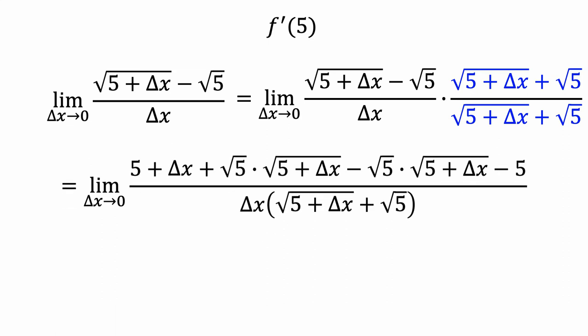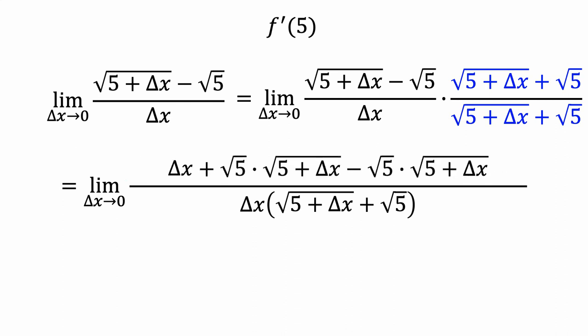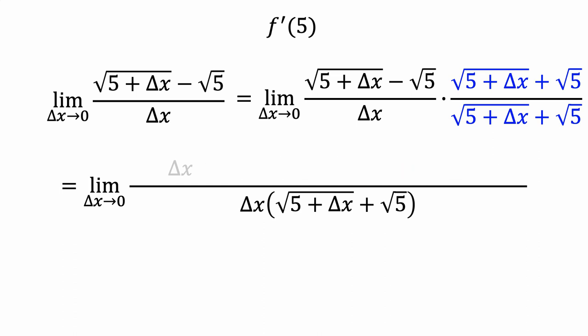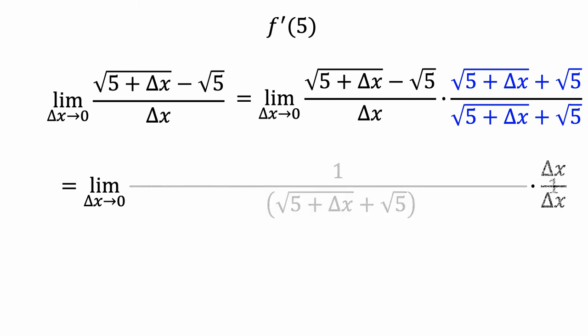Now let's see if there are some terms that cancel. Positive 5 and negative 5 add to 0, so they cancel and we can remove them from the fraction. Also, the two middle terms in the numerator are additive inverses of each other, so they add to 0 and cancel. Now, both the numerator and denominator of the fraction have a delta x term, which we can factor out. This leaves us with a 1 in the numerator. This new fraction is equivalent to 1, so we can remove it from the product.